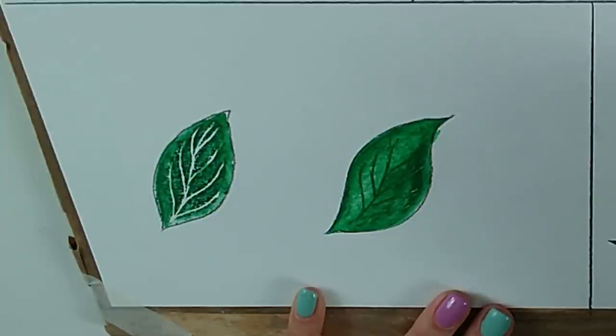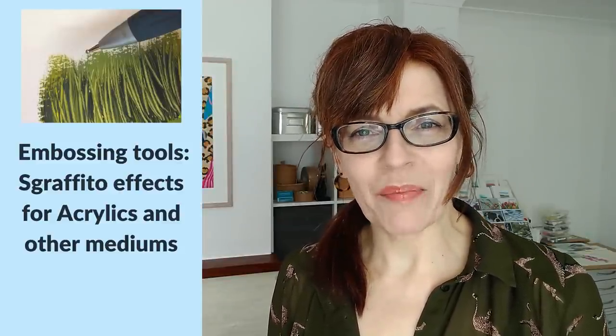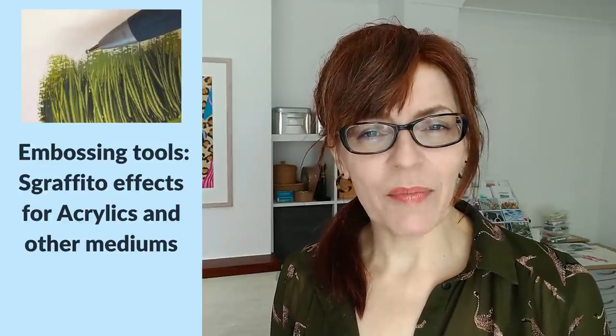So we've used our embossing tool to get light lines. We've used it to get dark lines. Now we're going to use it to sort of draw into the paint and get texture. I'm going to show you with acrylics. This can actually be done also to some extent with watercolor.